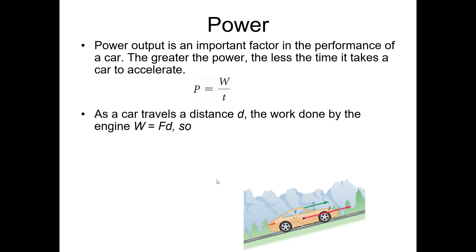Since power equals work divided by time, and work equals force times distance, you can substitute to get power equals force times distance divided by time. Distance divided by time is speed, so power also equals force times speed. This means a powerful car engine has a large force to produce high speed. We'll stick with power equals work divided by time for our calculations.